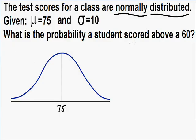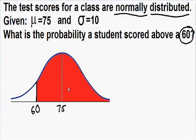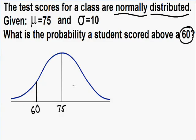The problem asks: what is the probability that a student scored above a 60? So we need to place the value of 60 on our normal curve. We know that 60 is less than 75, so we place 60 below the value of 75. To find the probability of a student scoring above 60, we need to find the area above the value of 60 — but the question is, how exactly do we find that area?